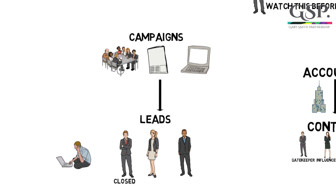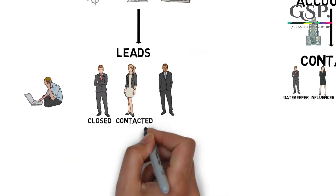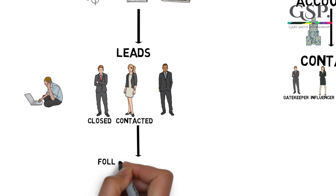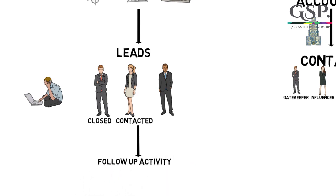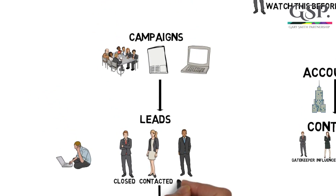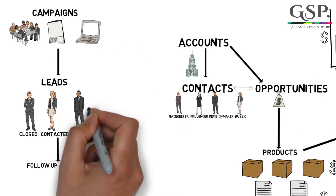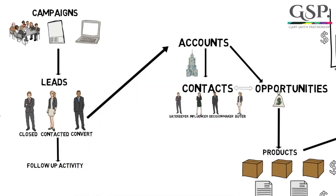Secondly, the lead is a definite maybe, so you update the lead's status to contacted and record a follow-up activity to contact the lead again in the future. And the third thing that can happen is you decide to qualify the lead — in other words, the person is ready to engage with you from a sales perspective. So this time, you convert the lead into an account, a contact and an opportunity.